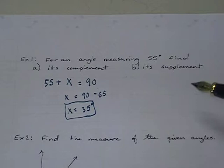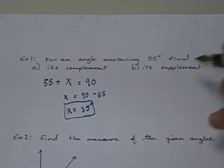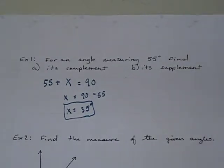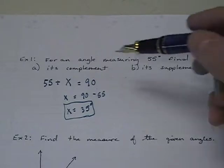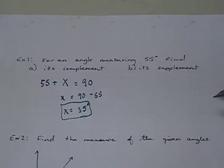So that's the complement of 55. The supplement is very similar to the complement. The difference is supplements are two angles that sum to 180. They make a straight angle. So complements make a right angle, supplements make a straight angle.